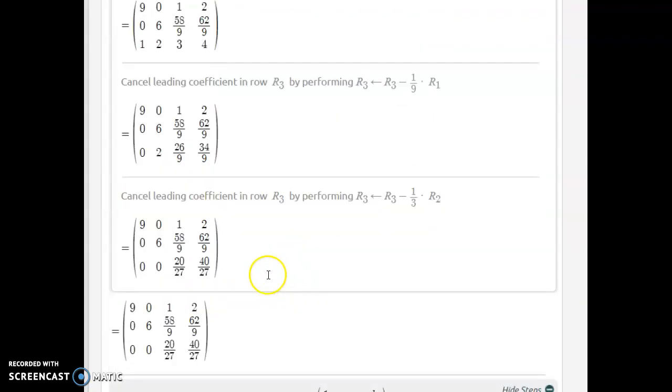Then introduce a zero right here. Well that looks easy right, times negative one third and as you do that you get a zero here. Again you get strange fractions.